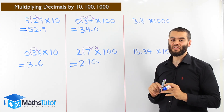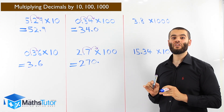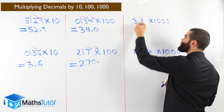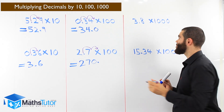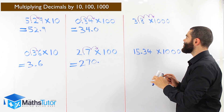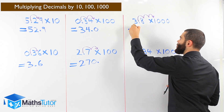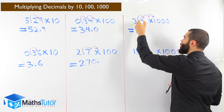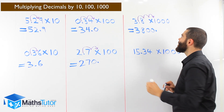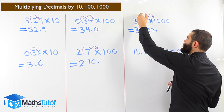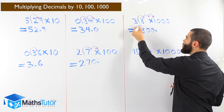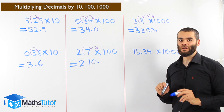3.8 times a thousand. How many zeros? Three zeros — which means three jumps. We locate our point: 3.8 times a thousand, we're moving the point three times to the right. One jump, two jumps, three jumps. We have the three, we're jumping over the eight, jumping over nothing — zero — and jumping over nothing again — zero. We put our point. Our answer is three thousand eight hundred.